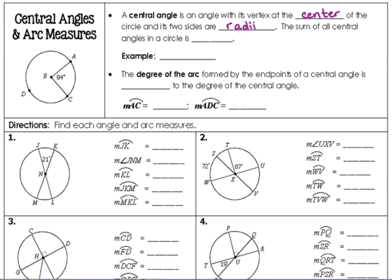A central angle is an angle with its vertex at the center of the circle and its two sides are radii. The sum of all central angles in a circle is 360 degrees. The entire circle contains 360 degrees. An example of a central angle in this circle would be angle ABC. That is a central angle because its vertex is on the center. The degree of the arc formed by the endpoints of a central angle is equal to the degree of the central angle. So that means arc AC here, minor arc AC, has a degree measure of 84 degrees.